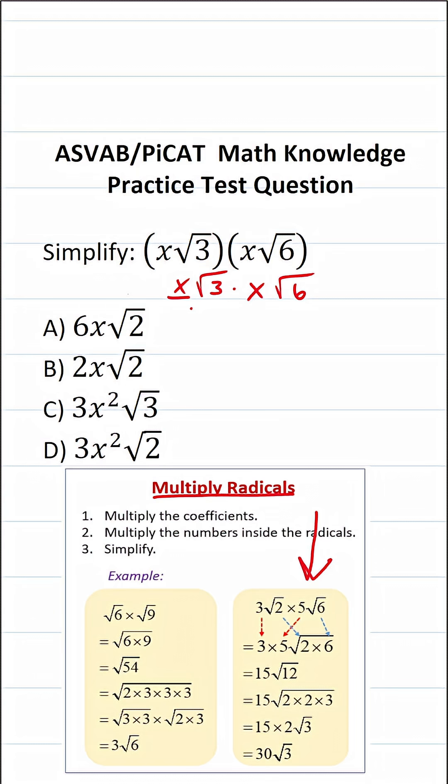What we're going to do is we're going to multiply our coefficients, which are these x's. So this becomes x times x. Then inside the radical,